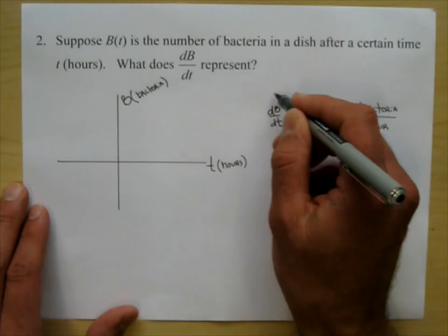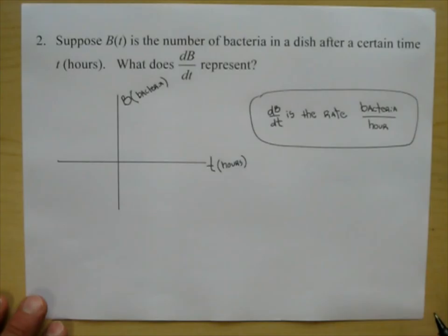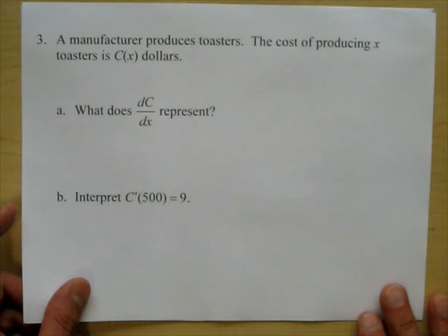You could be a biologist studying this — the derivative is going to be helpful because you're studying the rate of the bacteria per hour. You could be doing lots of things with derivatives, not just studying velocity.